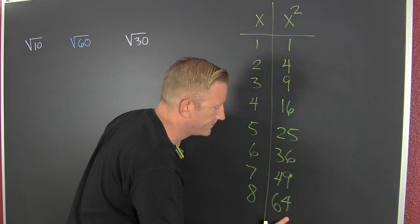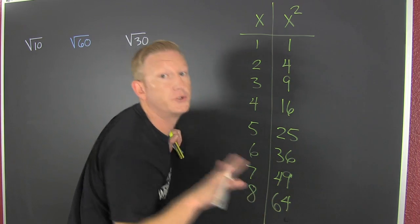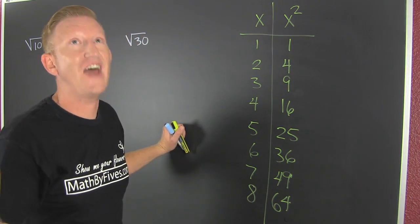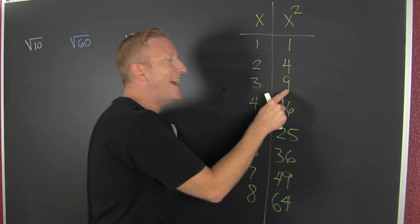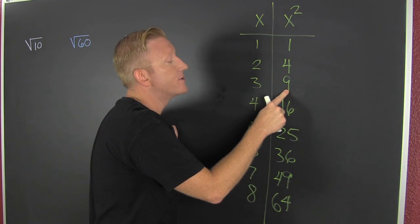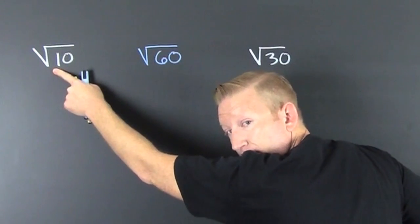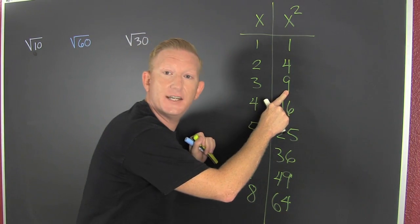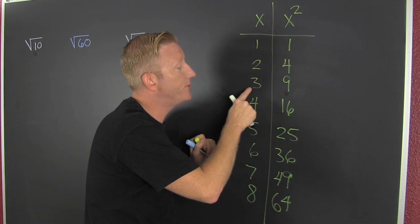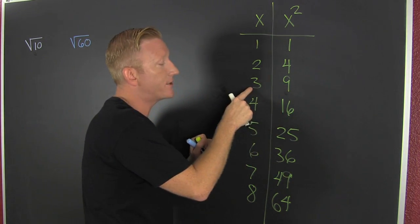64? Sure, it's close if you're talking thousands. No, 9 is close to 10. So the square root of 10 is gonna be close to the square root of 9, which is close to 3.